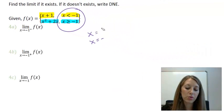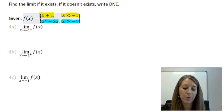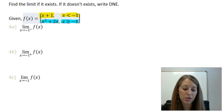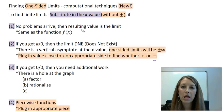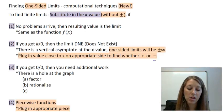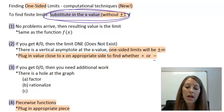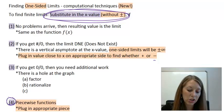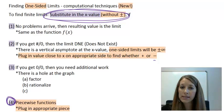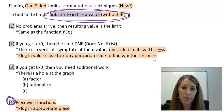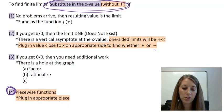We want to find the limits of this piecewise function. In Part A, we're looking for the limit as x approaches negative 1 from the left. Part B is as x approaches negative 1 from the right, and Part C is as x approaches negative 1. Our first step is always to substitute in the x value. For one-sided limits with piecewise functions, we need to plug in the appropriate piece.